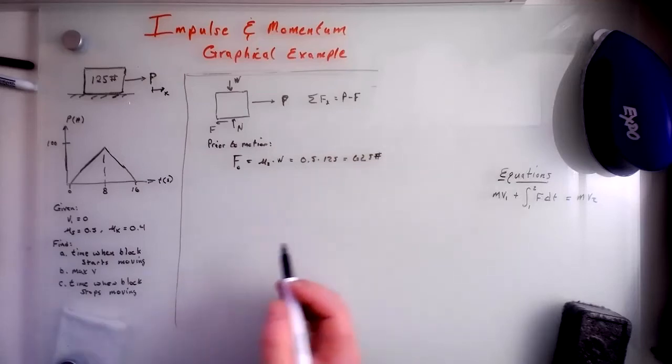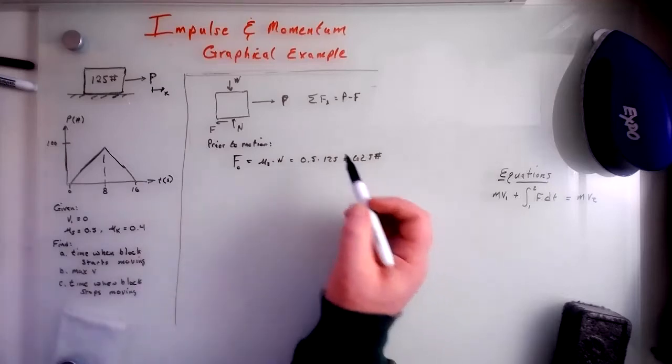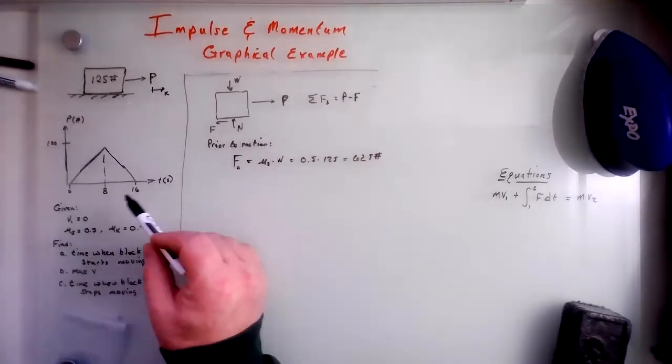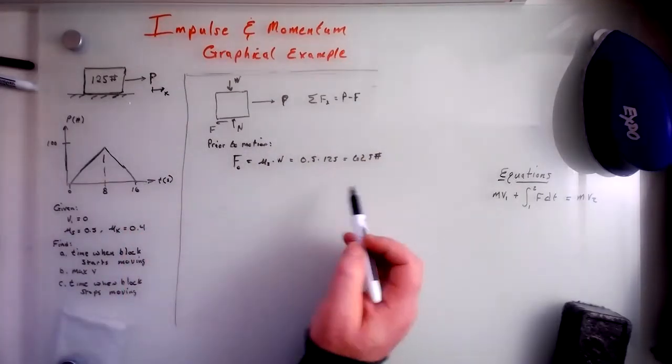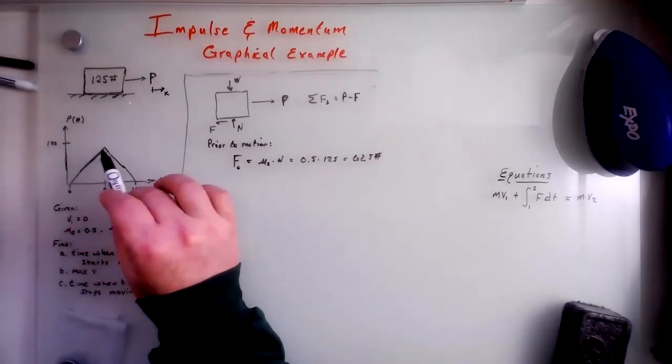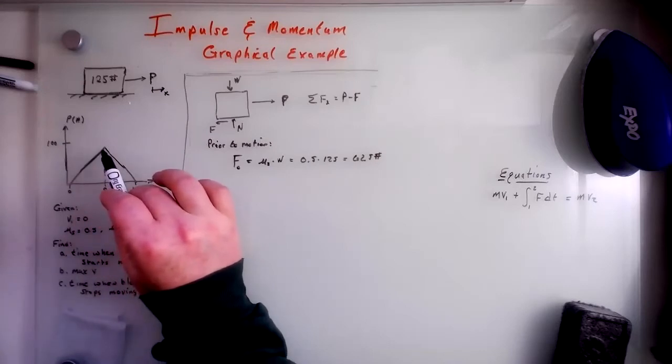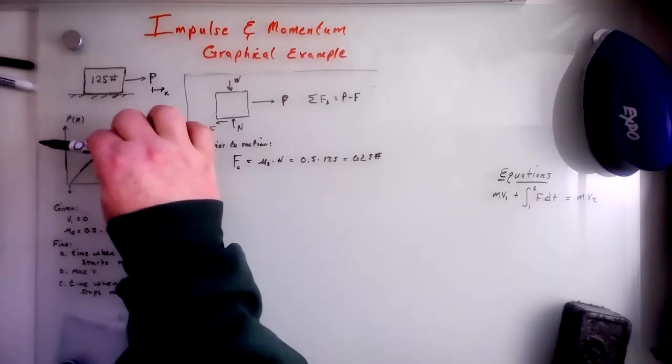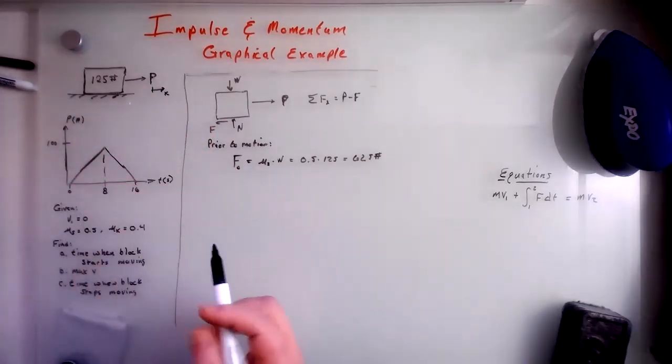So that we can't move until p is greater than f, right? So at some point along this trajectory, then p will go above 62.5 and things start moving. So let's figure out where that is.